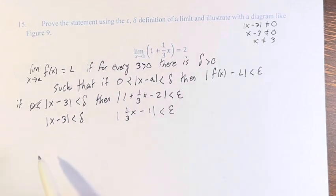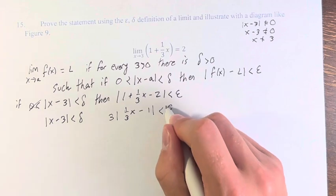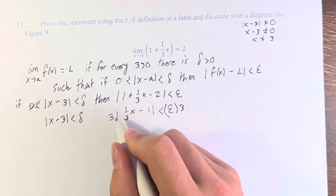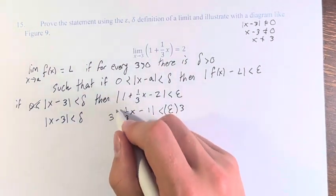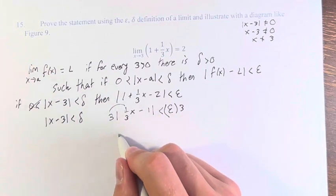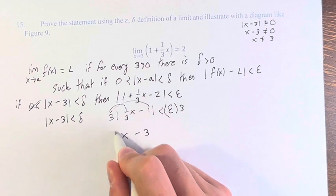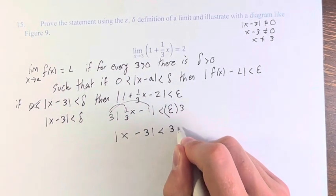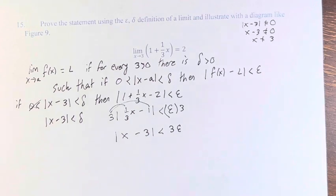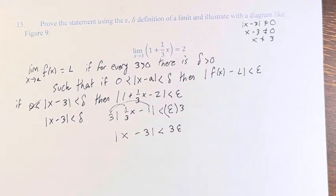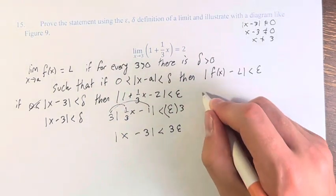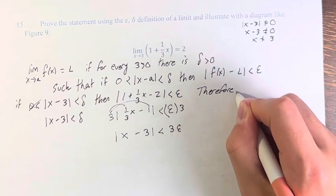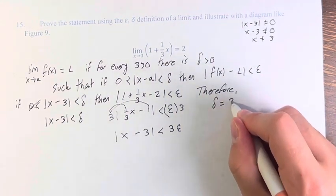So how do we get a relationship between delta and epsilon? If we multiply both sides by 3, we can factor 3 into the absolute value because it's positive. 3 times one-third x is x, and 3 times negative 1 is negative 3. So we get the absolute value of x minus 3 is less than 3 epsilon. Since the absolute value of x minus 3 is less than delta and also less than 3 epsilon, we can say delta equals 3 epsilon.